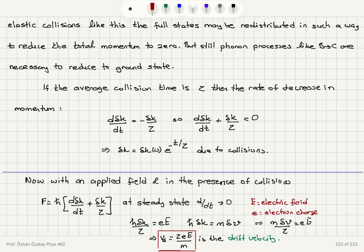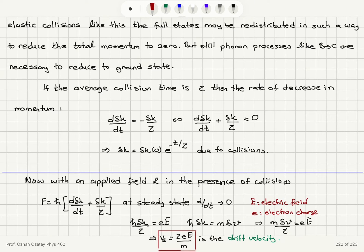Since h-bar times delta-k equals m times delta-v, we get m times delta-v over tau equals eE. The final velocity reached, delta-v, is called the drift velocity. It equals tau times e times E divided by m. This is the steady-state condition where collisions compensate for the applied force, giving a drift velocity that is linearly proportional to the electric field.